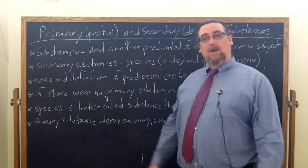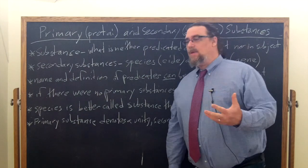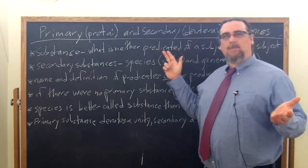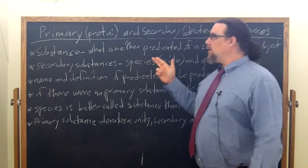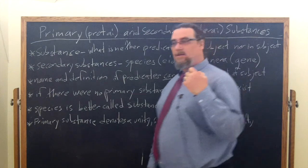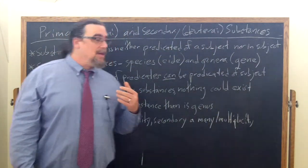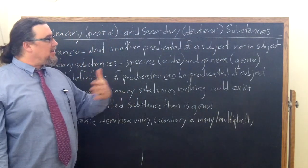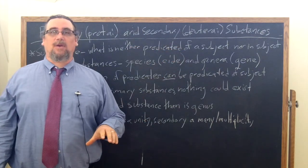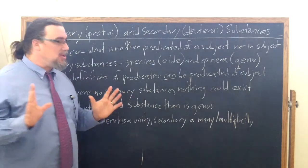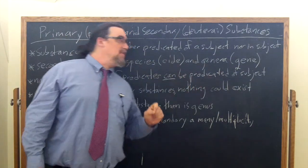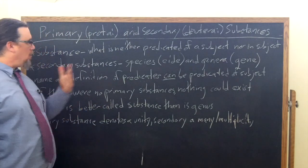What does Aristotle have to say? He begins by saying what most deserves to be called substance is what is neither predicated — neither said, using the verb legein, to say, to speak — neither predicated of a subject nor in a subject. If this distinction is throwing you, I've done another discussion of that, so you should look up that video before you go into this one.